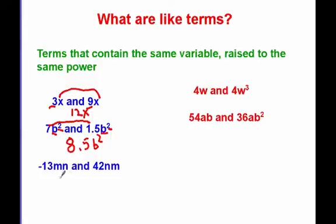And down here, we have another example. Negative 13mn and 42mn, or nm. Now this one might be tricky, but if we look, they both have an m, they both have an n. Now both our variables are raised to the first power. So these are like terms. If I combine them, I get negative 13 plus 42, which is 29, and then I put nm.